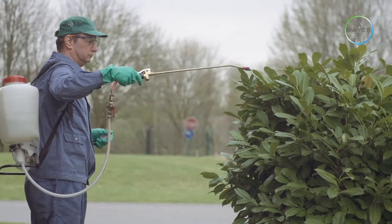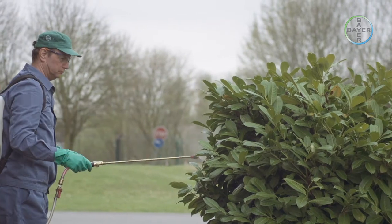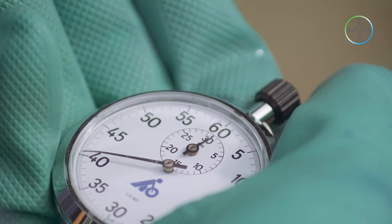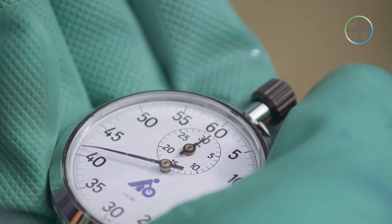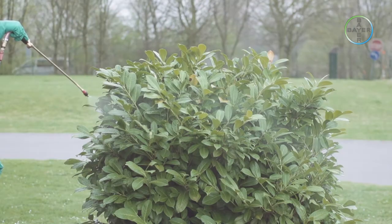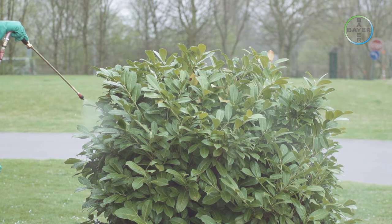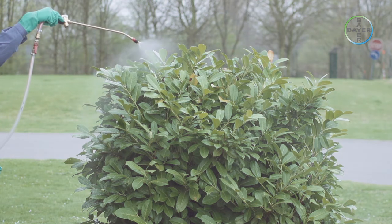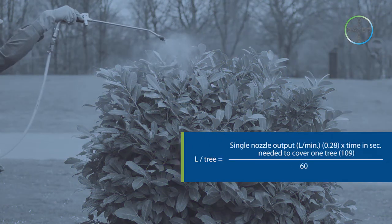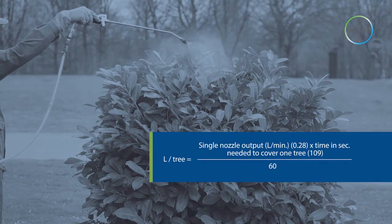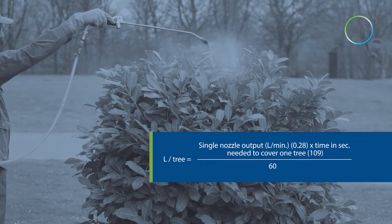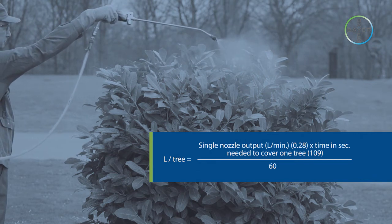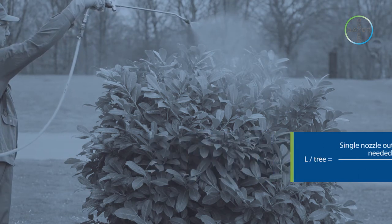Measure the time needed to cover one tree. Spray one tree until shortly before the point of runoff and measure the time in seconds. Calculate the water volume per hectare using the following formula. First, we calculate the amount of water to be applied on a single tree. Liters per tree equals single nozzle output, liters a minute, 0.28, times the time in seconds needed to cover one tree, 109, over 60.